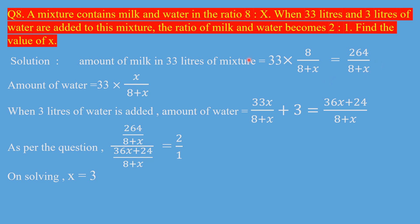In a similar manner, calculate the amount of water in this mixture: 33 multiplied by x upon the sum of the ratios, which is 33 times x upon 8 plus x.